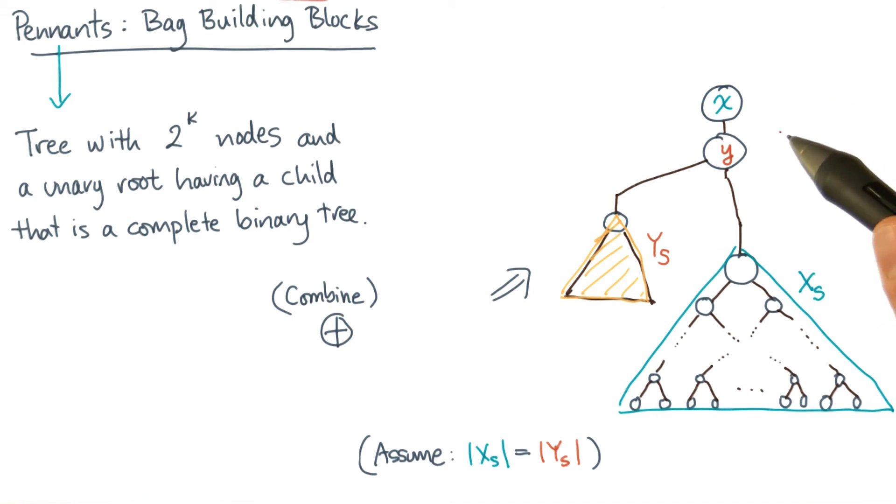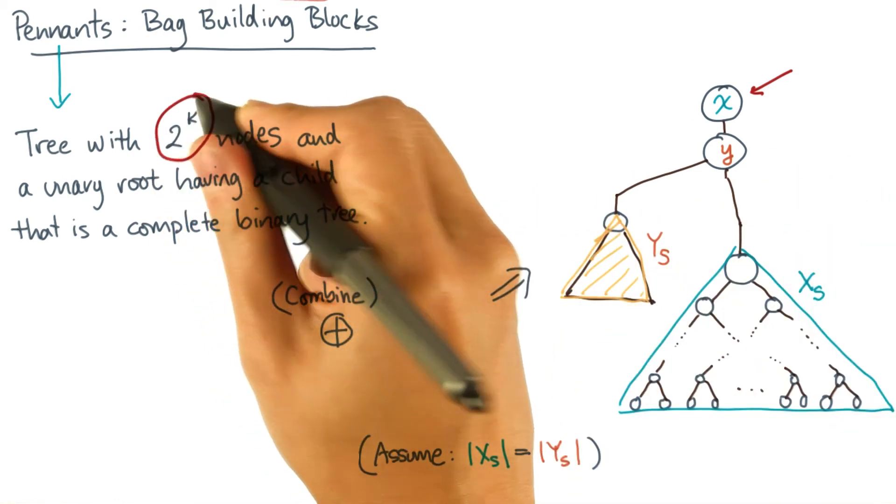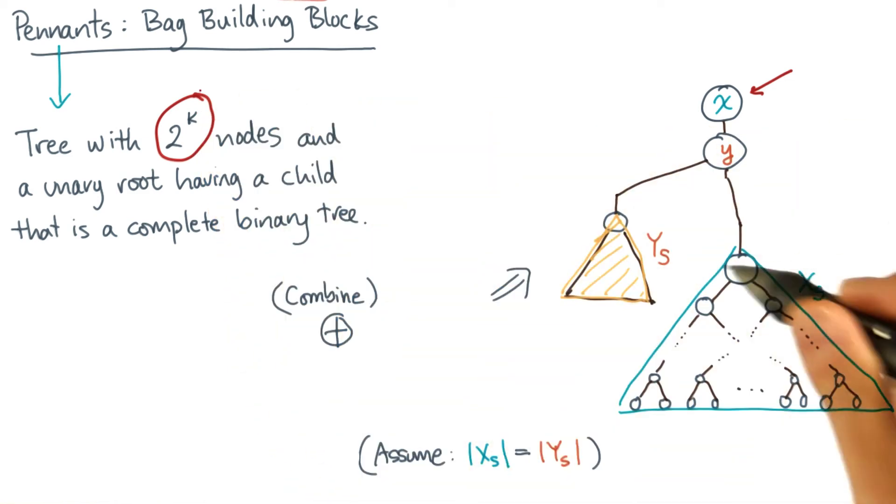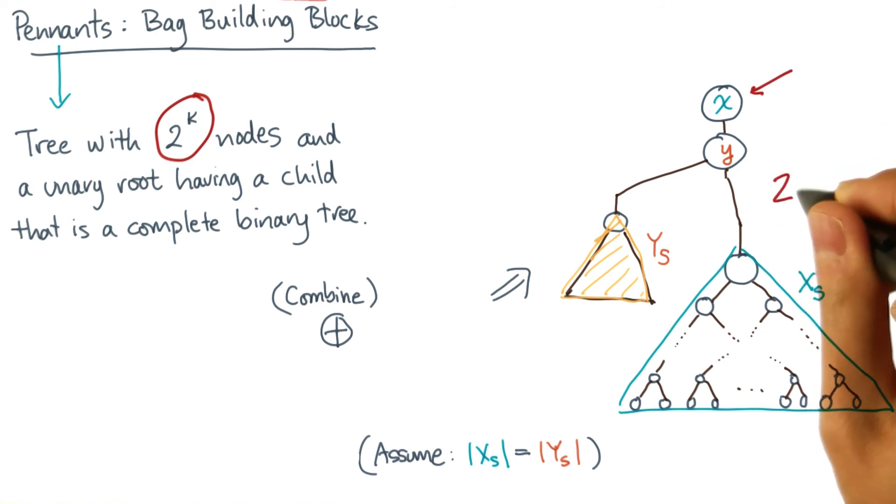Now notice that this new blob is still a pennant. It's got a unary root and a complete binary subtree. Now, both of the original pennants were of size 2^k. So that means the combined pennant will have 2^k plus 2^k, or 2^(k+1) nodes.